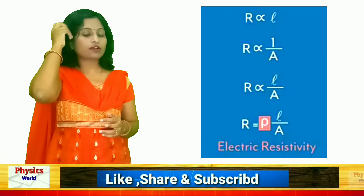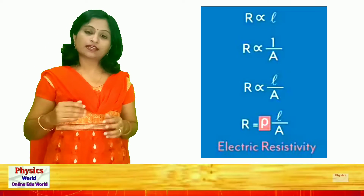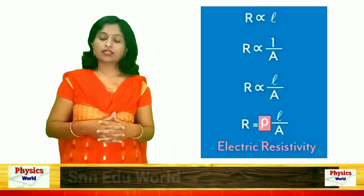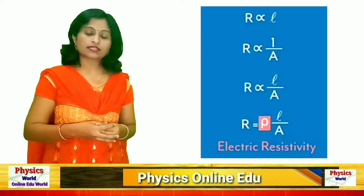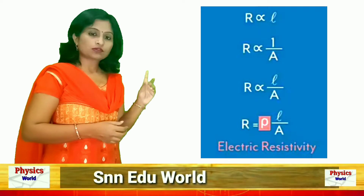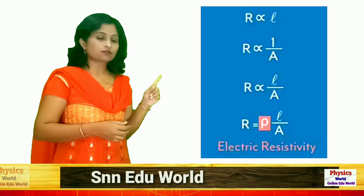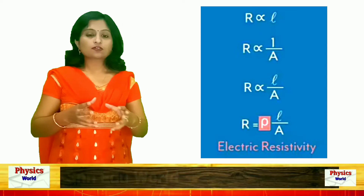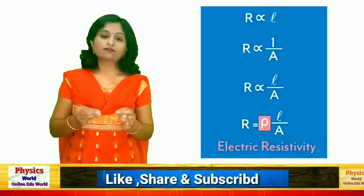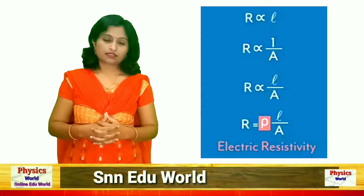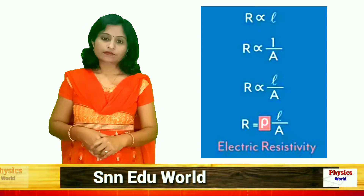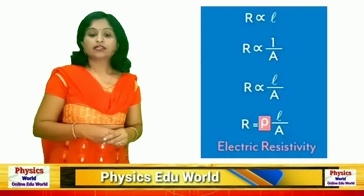Rho is a symbol from the Greek language, like theta or lambda. So the constant here is represented as rho. Resistance R equals rho times L over A. This rho is nothing but the resistivity of the conductor, and it is constant for a particular type of conductor. When the material changes, the resistivity will change.